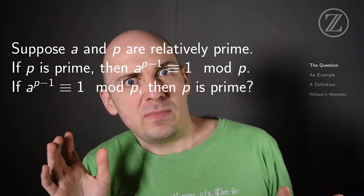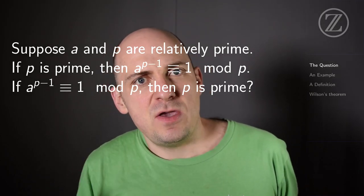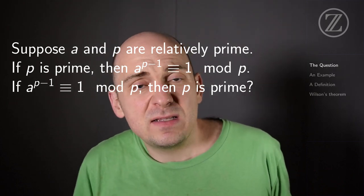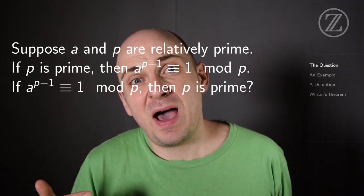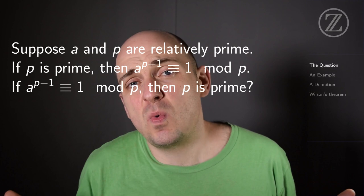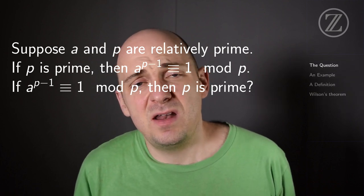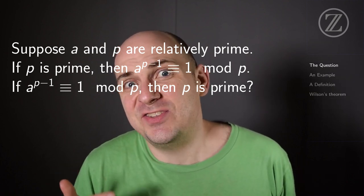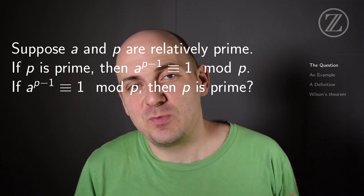Let's let p be a prime number. If a and p are relatively prime, then Fermat's Little Theorem says that a raised to the power p minus 1 is congruent to 1 modulo p. Another way to say this is just if a isn't 0 modulo p, if p is prime.